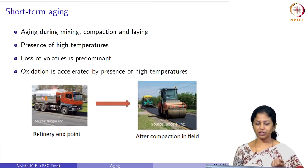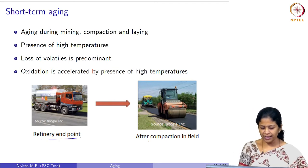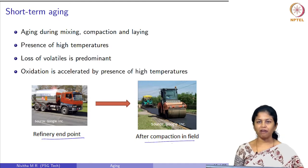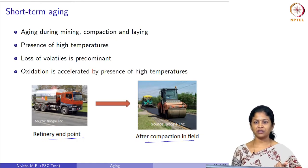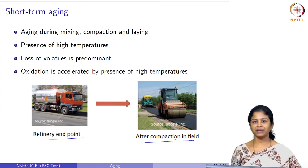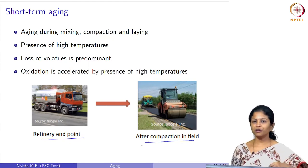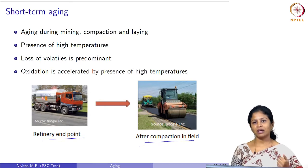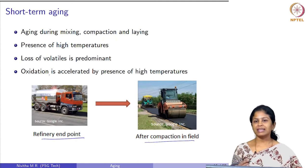Short-term aging is the aging during mixing, compaction, and laying — from the refinery end point to after it is compacted in the field. The additional factors influencing this aging include the presence of high temperatures, ranging from 100 to 165 degrees Celsius. Because of these high temperatures, the loss of volatiles is predominant and oxidation is accelerated.